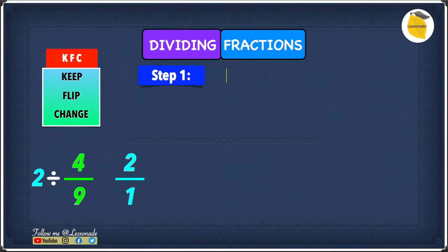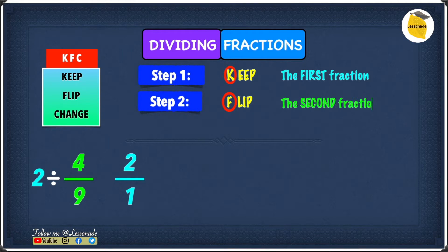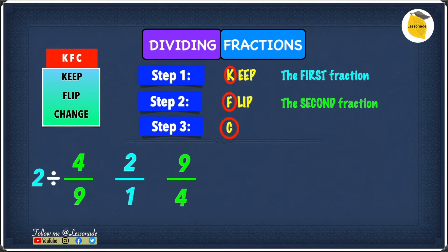Step 1 is K, and K stands for Keep — keep the first fraction. The first fraction is 2 over 1, so we keep it as it is. Step 2 is F, and F stands for Flip — flip the second fraction. The second fraction is 4 over 9, so after flipping it becomes 9 over 4. Step 3 is C, and C stands for Change — change the sign. The division sign gets changed into a multiplication sign.